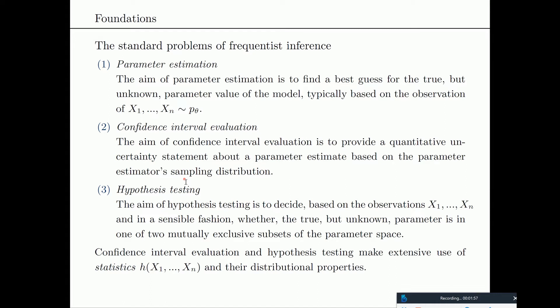As before in frequentist statistics, we are interested in distributions of functions of the data. I changed the original slide here and put 'statistics' instead of 'estimators'. The difference is that estimators map into the parameter space because they're trying to estimate parameters, while statistics don't necessarily do that. Think about the T statistic in the GLM — it doesn't map into parameter space, but into one-dimensional space.